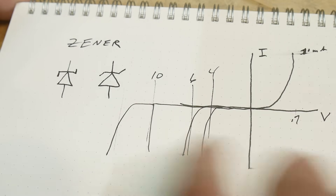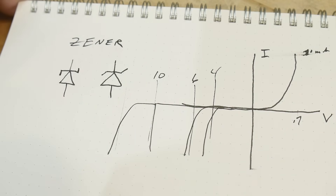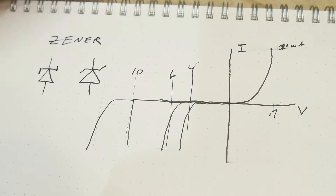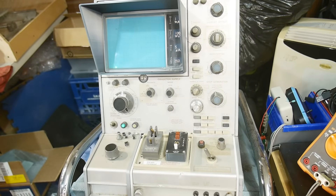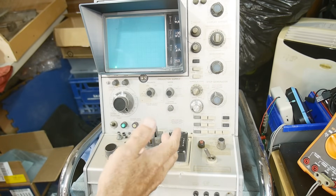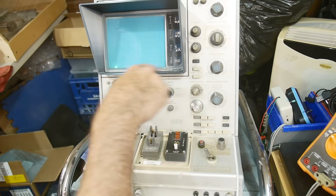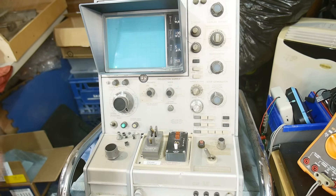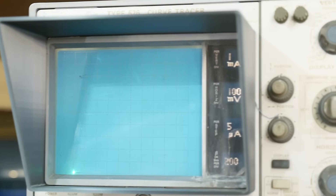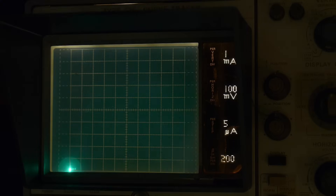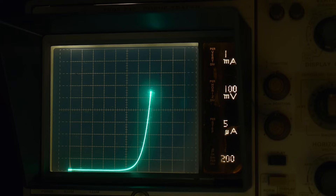Let's look at this effect on a curve tracer in real time. We're using a Tektronix Type 576 curve tracer — I've done a bunch of videos on this. It gives us a plot of voltage versus current, just like the graph I drew. Let me kill the light so you can see what's going on.